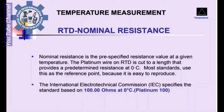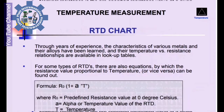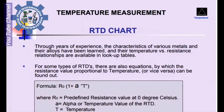Most standards use 0°C as the reference point because it is easy to reproduce. The International Electro-Technical Commission (IEC) specifies the standard based on 100 ohms at 0°C for Platinum. Through years of experience, the characteristics of various metals and their alloys have been learned and their temperature vs. resistance relationships are available in look-up tables.